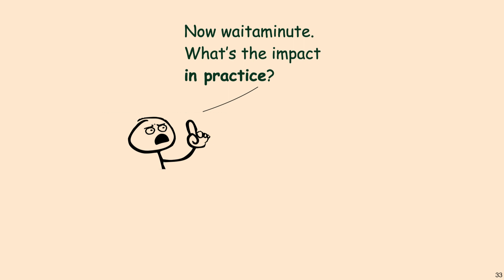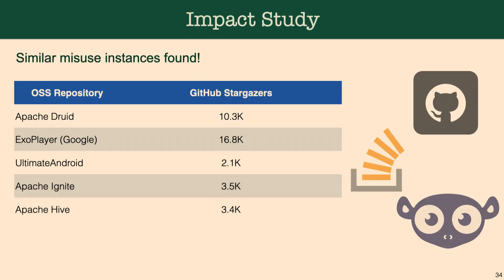At this point you might be thinking: who is going to write code in this convoluted way? That's a very good question, because we thought the same. So we did an impact study on open source applications on Stack Overflow as well as open source applications scanned by LGTM. We found that similar misuse cases were found in open source applications everywhere, so all these flaws that we found have real impact in real applications.